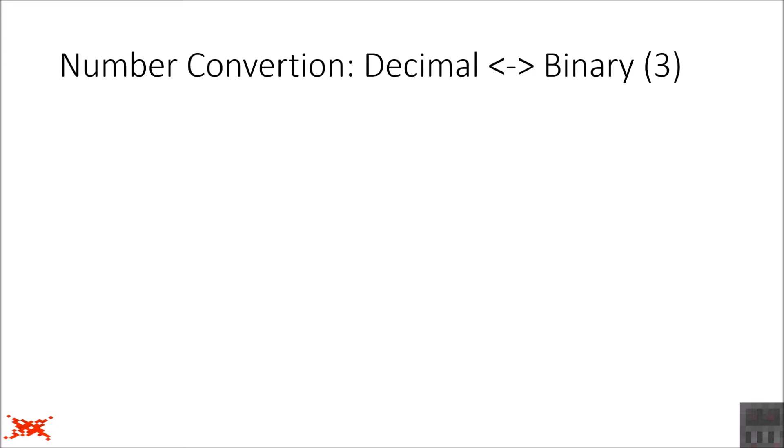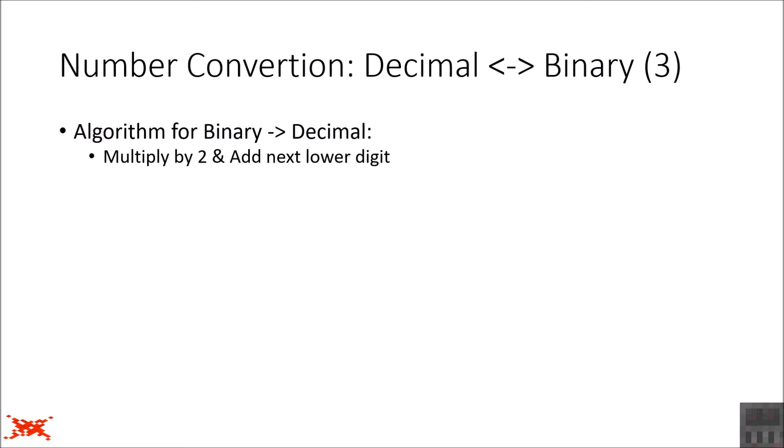Now let's go in the opposite direction — turn a binary number into a decimal number. The algorithm works similarly, just in the opposite direction. Instead of dividing, we are now multiplying by 2 and adding the next lower digit of our binary number. We start with the highest digit, then the second highest, and so on. The result of each operation is the input for the next iteration, and we repeat until we have used all digits.